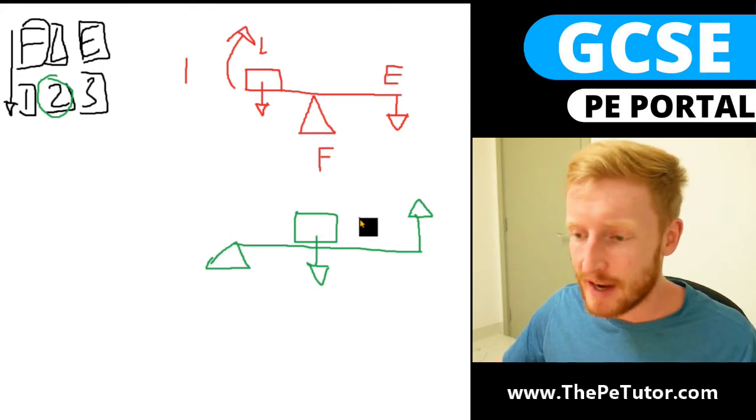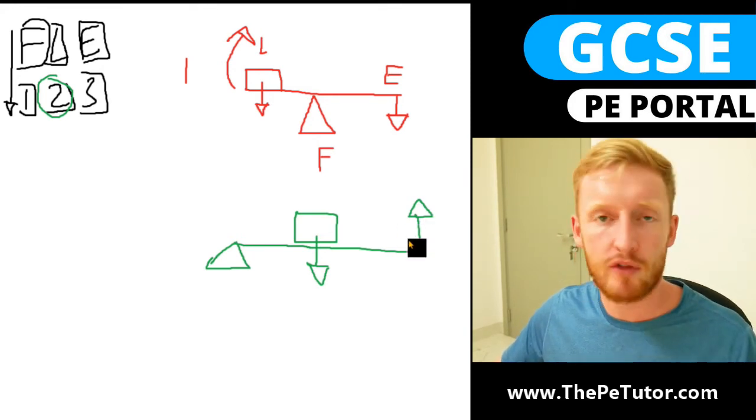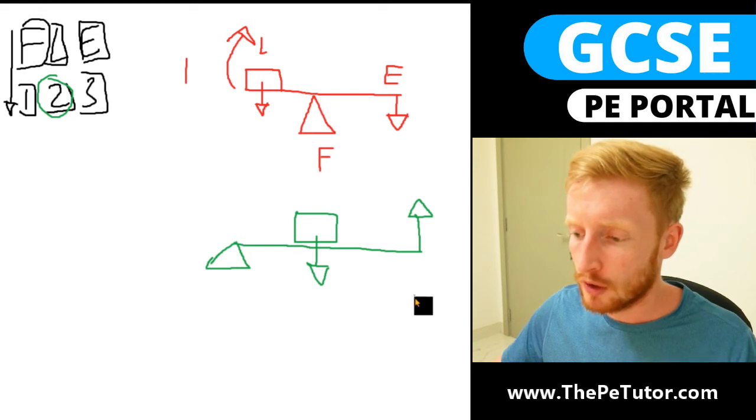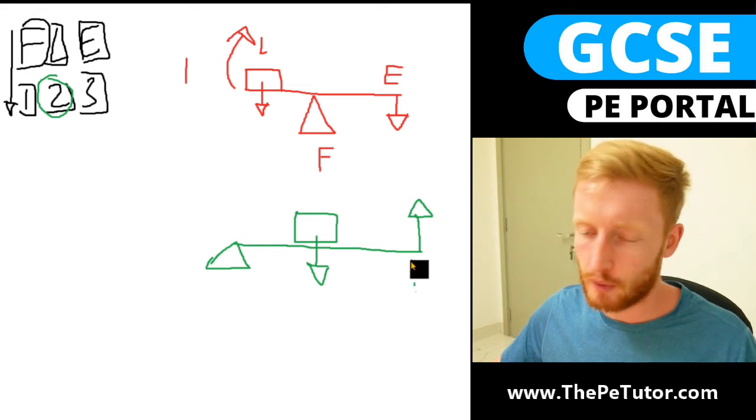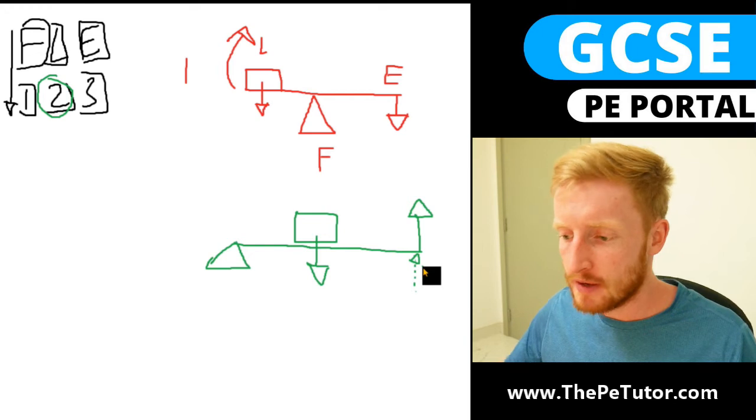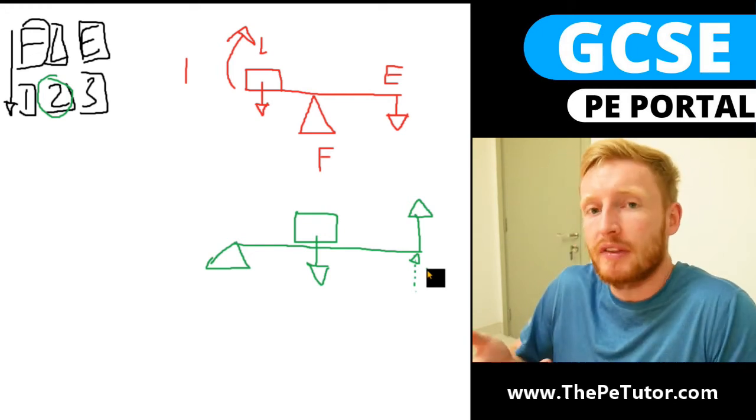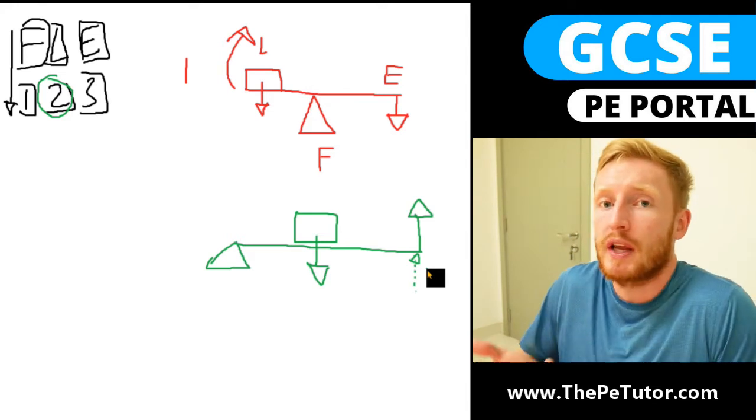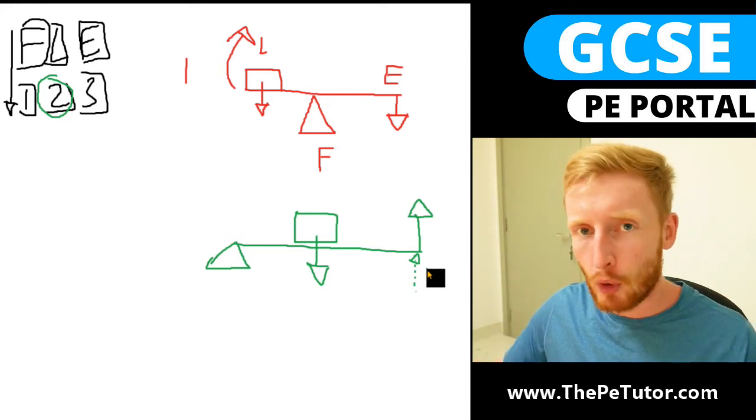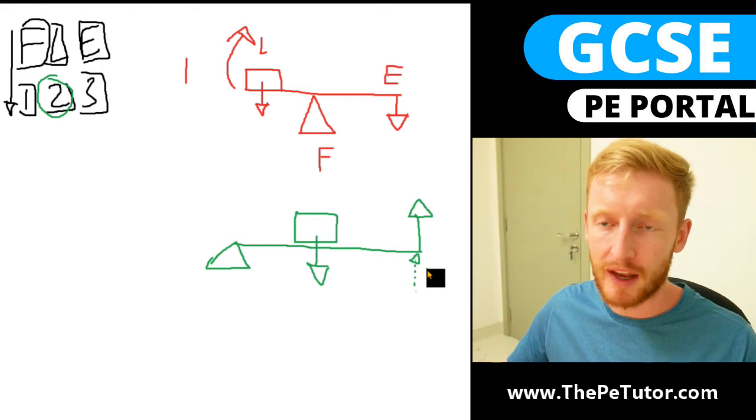Now it's important to note in everyday life this effort could be applied from underneath so we could draw it from that direction. But this would be for example a wheelbarrow where a person is pushing upwards from underneath the metal structure and pushing with effort upwards through that end.